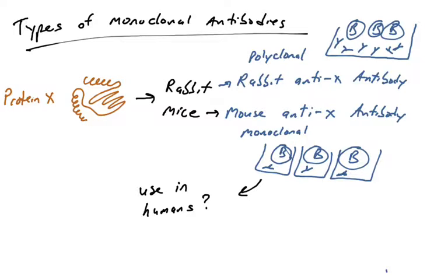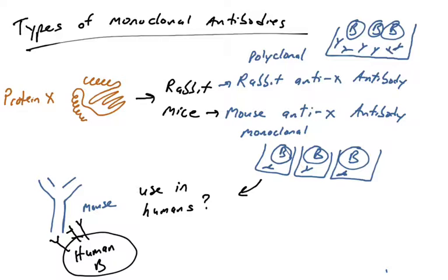Can you take an antibody from a mouse and inject it into a human? You could, and it's been done before, but there's a problem. A mouse antibody has mouse heavy chain and light chain and binds protein X, but it's a mouse protein — and mouse proteins are not human proteins. Mouse proteins will be identified as foreign or non-self in the human body. Humans will likely make naive B cells that bind the Fc region or other parts of the constant region of the mouse antibody, leading to antibodies that attack the mouse antibody and form immune complexes. This provokes a type III hypersensitivity reaction, so injecting mouse antibodies into a human provokes a harmful immune response.